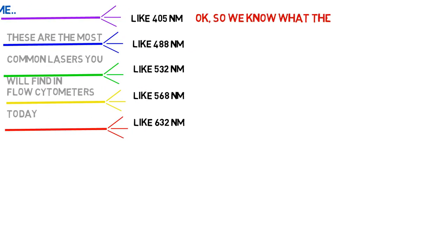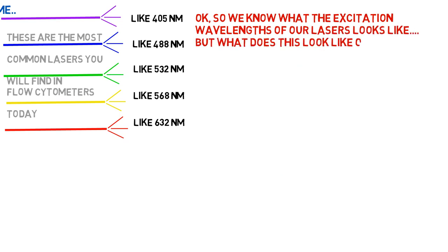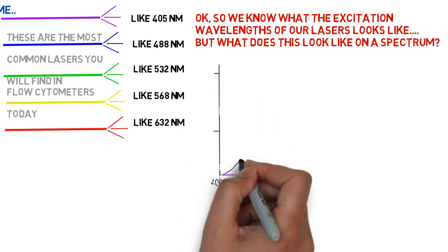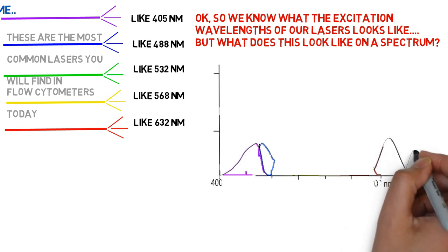Excitation is when we use one wavelength of light source to raise the energy of an electron to an excited state in a chemical called a fluorochrome. While we always know the excitation wavelength of our laser, we have to look carefully at where these wavelengths fit on the visible spectrum.